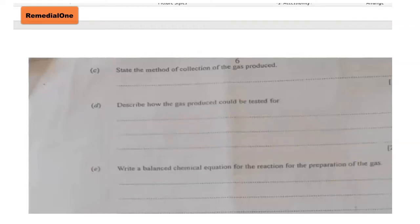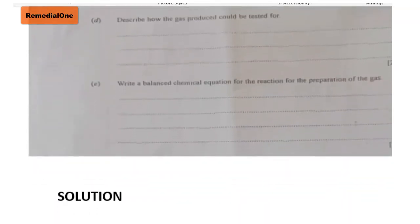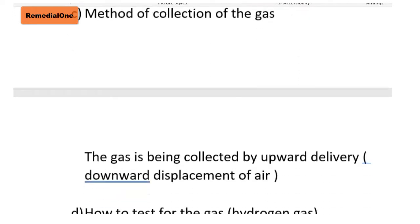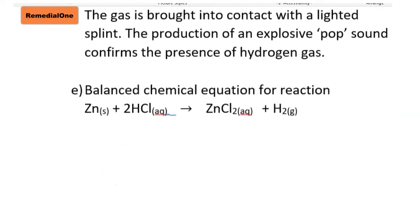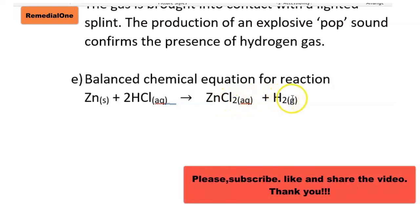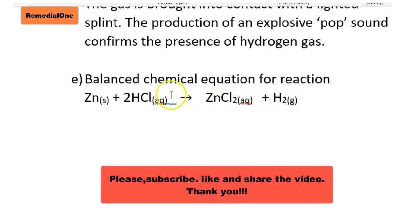Now let's look at the balanced chemical equation for this reaction. The reaction is between dilute hydrochloric acid and zinc metal: Zn(s) + 2HCl(aq) → ZnCl₂(aq) + H₂(g). You have to put the coefficient 2 in front of HCl to balance the equation.